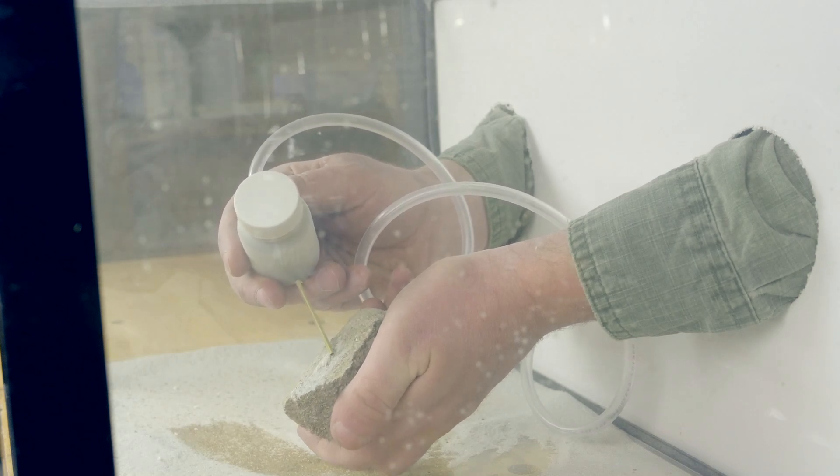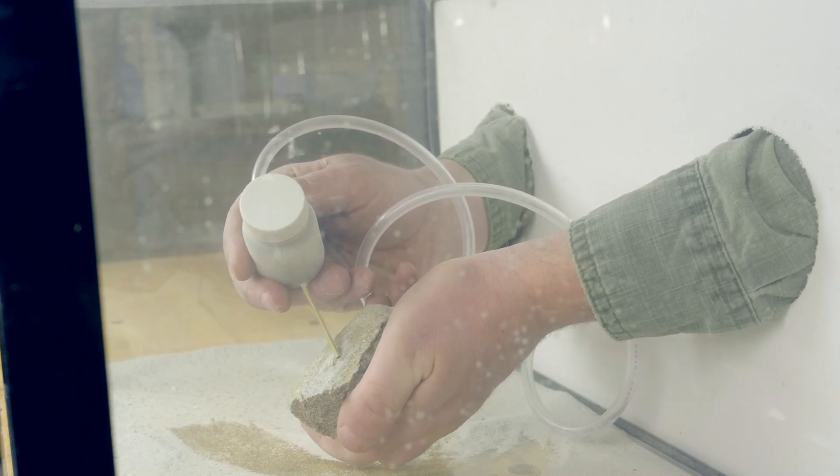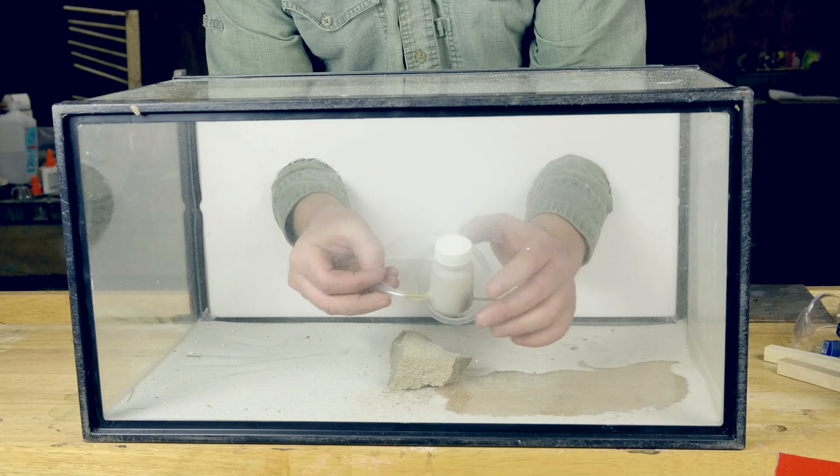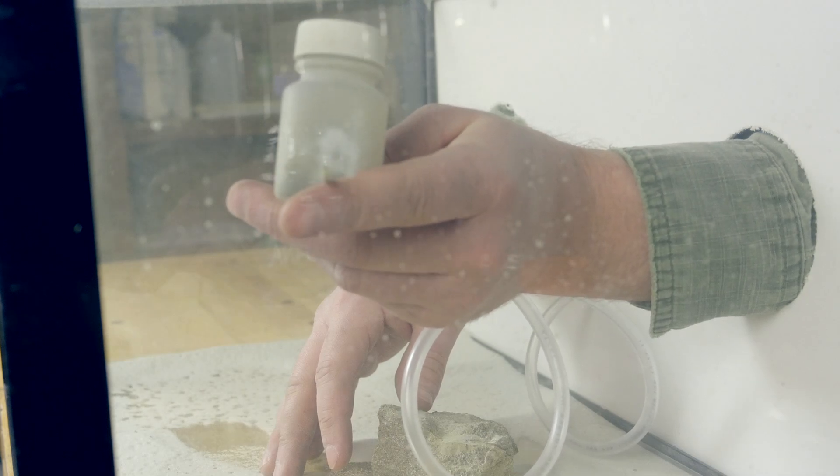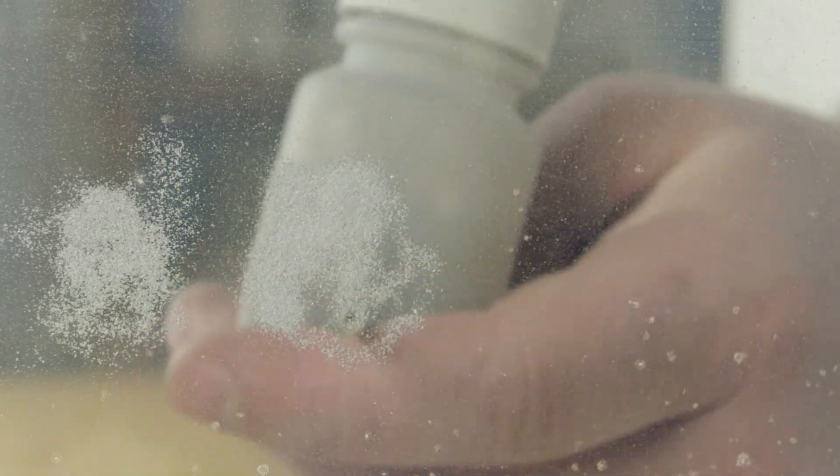The downside of this setup is that I noticed the fish tank was slowly turning opaque as the glass was damaged by the sandblasting inside. Ideally, a sandblasting chamber should be made in such a way that the glass can be replaced.